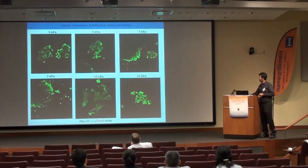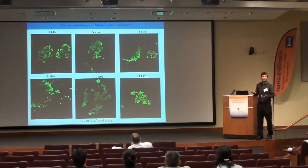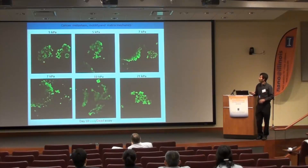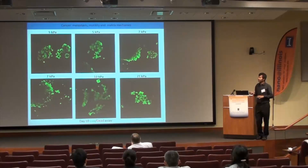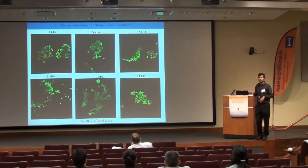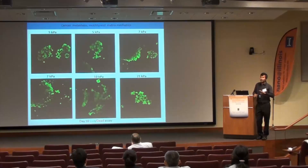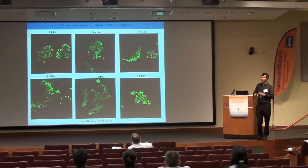As preliminary data, we do see significant epithelial-to-rounded morphological transition inside these hydrogels in the live/dead assay at day 10. This morphological transition occurs across all stiffnesses tested, ranging from 5 kPa to 20 kPa, suggesting the E-to-R transition is independent of matrix dimensionality as well.